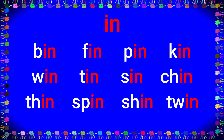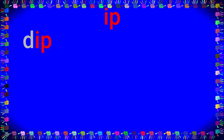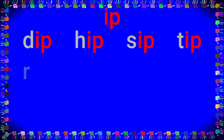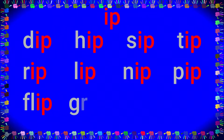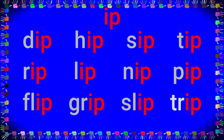Ip sound. The -ip family: L-ip — Lip, N-ip — Nip, P-ip — Pip, Fl-ip — Flip, Gr-ip — Grip, Sl-ip — Slip, Tr-ip — Trip. It word family, it sound.